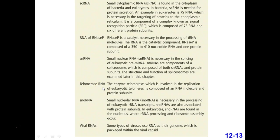Telomerase uses the RNA sequence it contains to add DNA to the ends of the telomeres. Small nucleolar RNAs are necessary in processing ribosomal RNA transcripts within the nucleolus — a region within the nucleus of a eukaryote that makes huge amounts of ribosomal RNA. So much is being produced that it forms a characteristic region within the nucleus, referred to as the nucleolus.